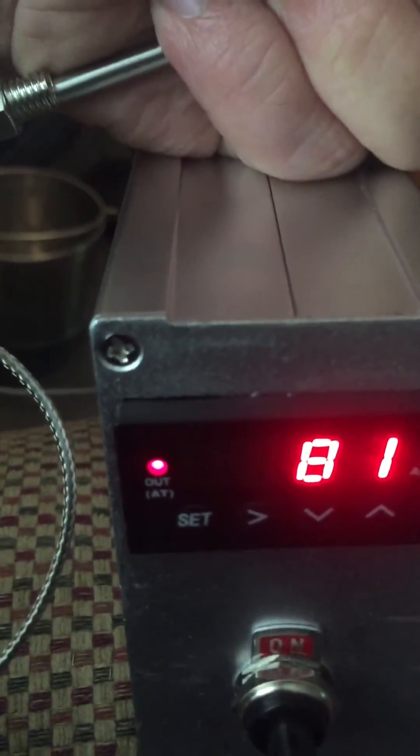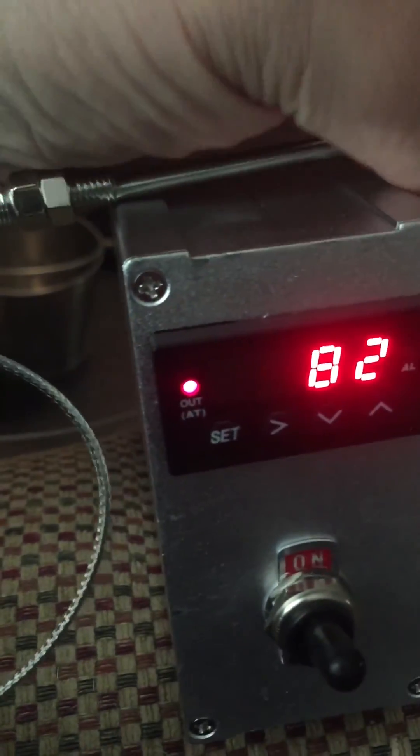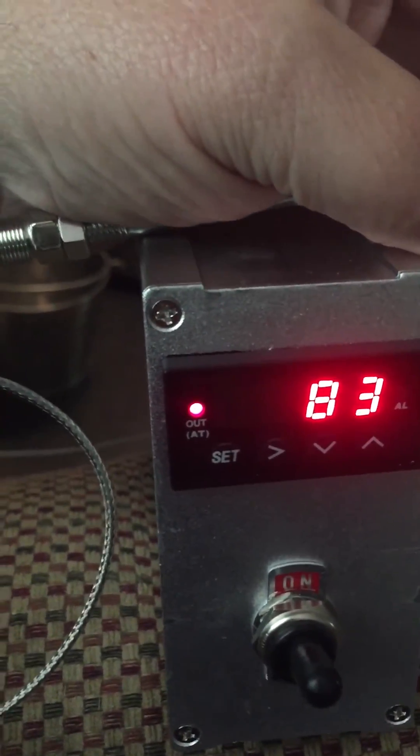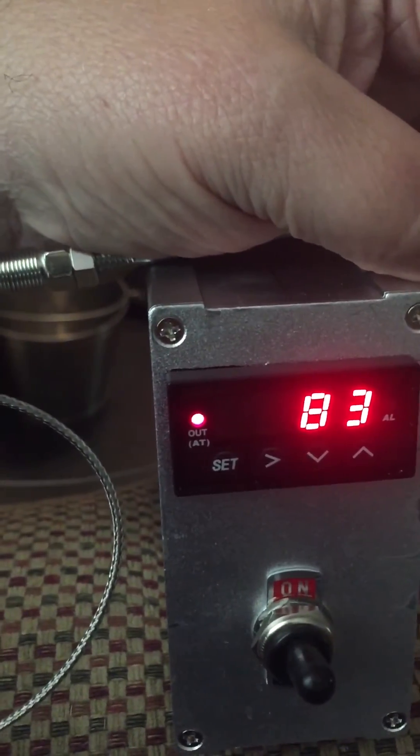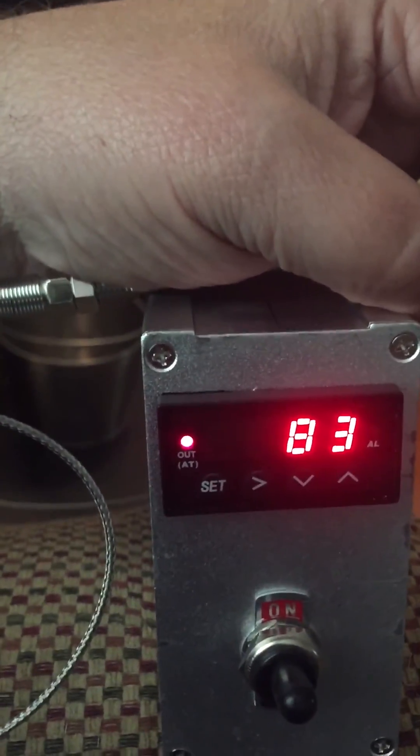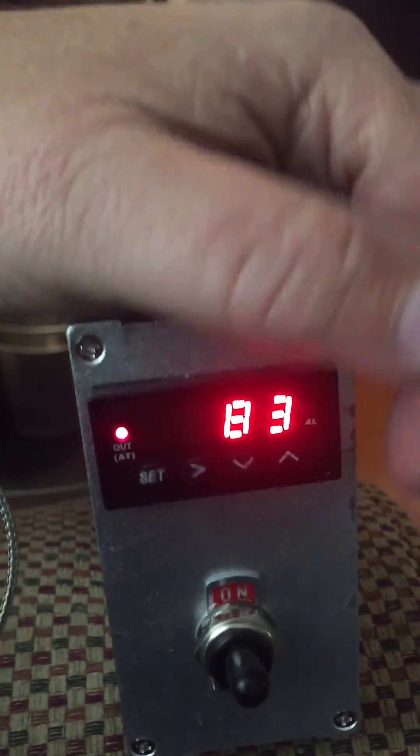Now the red light is gonna stay on until you're up to temperature. And then once you get around your target temperature, which in this particular case is 500 degrees, don't be surprised if you see it blinking to maintain the temperature.